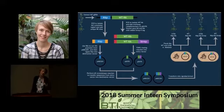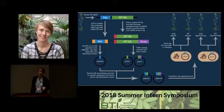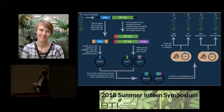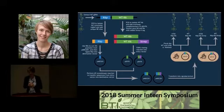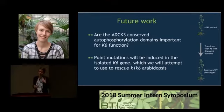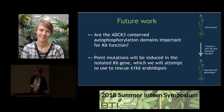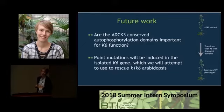Transformed Arabidopsis will be grown on media lacking sucrose — as you may recall, K1K6 seedlings will show pale leaves if grown on media without sucrose. So if the rescue is successful, the mutants should look indistinguishable from wild type. Once the wild-type K6 rescue has been confirmed, we will use this system to test if certain conserved autophosphorylation domains are important for K6 function, by introducing point mutations in the K6 gene and attempting to rescue K1K6 mutants with the mutated K6 gene.